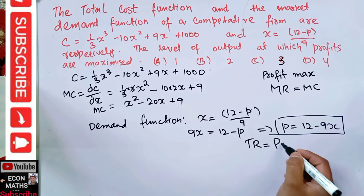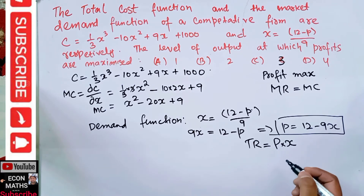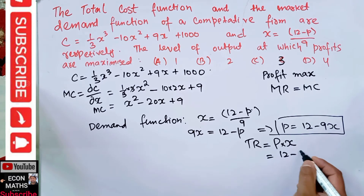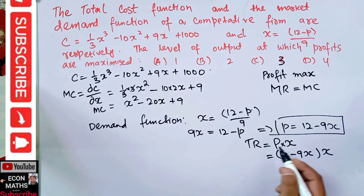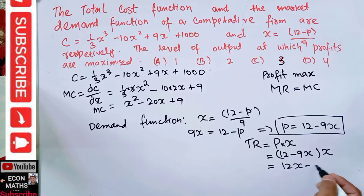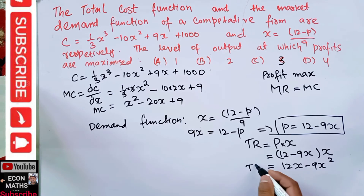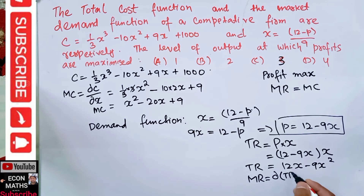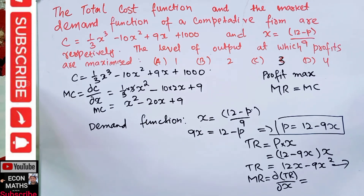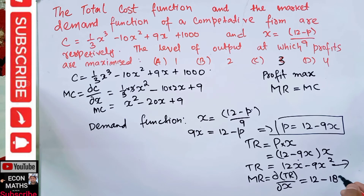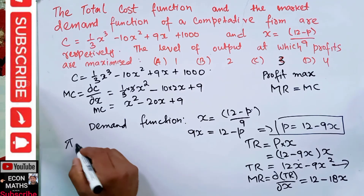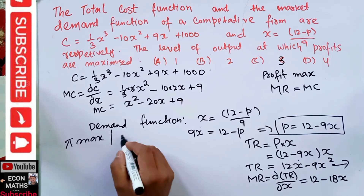Total revenue equals price times quantity. Multiplying the inverse demand function by X: TR = (12 - 9X)·X = 12x - 9x². Now marginal revenue is the derivative of total revenue with respect to X: the derivative of 12x is 12, and the derivative of -9x² is -18x. So marginal revenue = 12 - 18x.